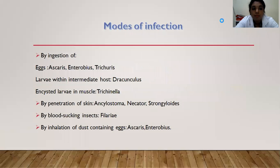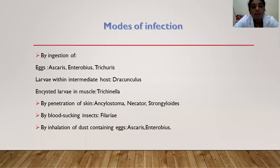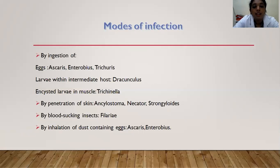By ingestion of eggs, it is found in Ascaris, Enterobius, and Trichuris. By ingestion of larvae within the intermediate host, it is found in Dracunculus. By ingestion of encysted larvae in muscle, it is found in Trichinella. By penetration of skin — Ancylostoma, Necator, and Strongyloides. By blood-sucking insects, it is found in Filaria. By inhalation of dust containing eggs, it is also found in Ascaris and Enterobius.